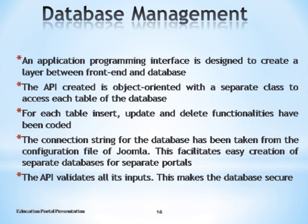We obtain the connection string from the configuration files of Joomla. As per requirements, we need to create separate portals for separate subjects. This is easily facilitated by obtaining the connection string from Joomla's configuration files — we can change the connection string and easily obtain two different databases. We also have a separate set of validations at the API level, different from front-end validations, giving us multi-layered validation at both front end and back end, increasing security significantly.